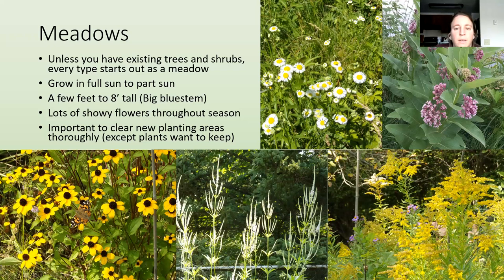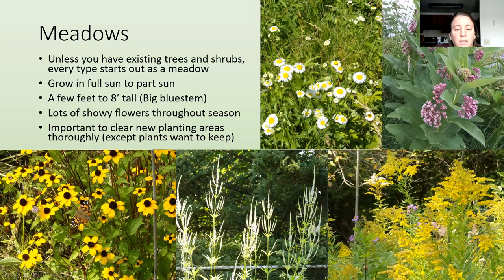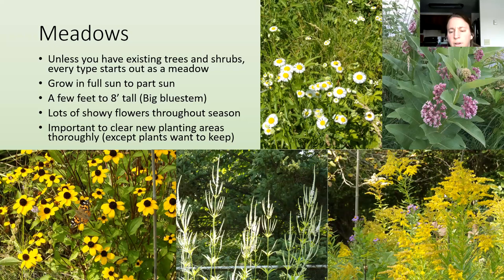These plants are a native annual and swamp milkweed with a little monarch caterpillar on it. This is brown-eyed Susan with a painted lady butterfly. This is culver's root, which has a beautiful tall white spike in summer — it gets about six feet tall but you can see through the top so it's not giving you that enclosed feeling of some tall meadows. And here are some goldenrods and New England aster in the fall.